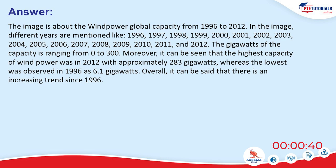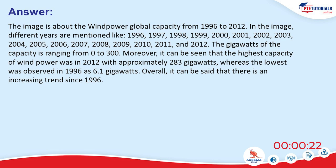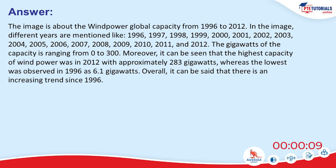The image is about wind power global capacity from 1996 to 2012. Different years are mentioned and the gigawatts of capacity ranges from 0 to 300. The highest capacity of wind power was in 2012 with approximately 283 gigawatts, whereas the lowest was observed in 1996 at 6.1 gigawatts. Overall, there is an increasing trend since 1996.